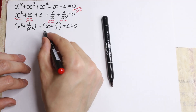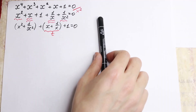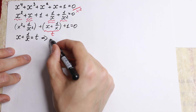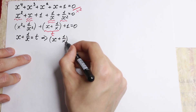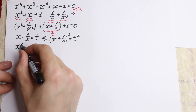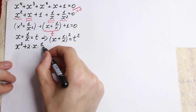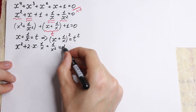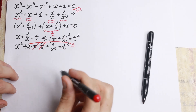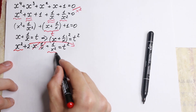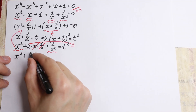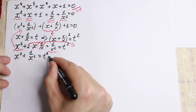We can write a substitution: let t = x + 1/x. But x squared plus 1 over x squared is not simply t squared. If we raise x plus 1 over x to the second power, we get x squared plus 2 times x times 1/x plus 1 over x squared equals t squared. We can cancel the middle terms, so x squared plus 1 over x squared equals t squared minus 2.